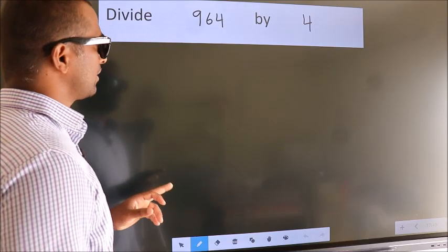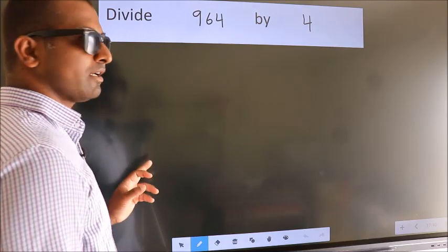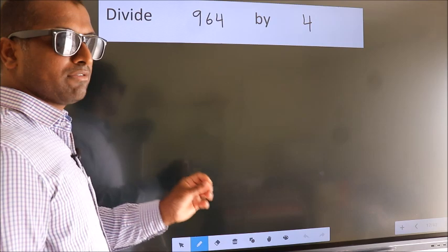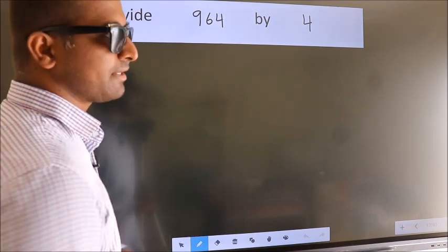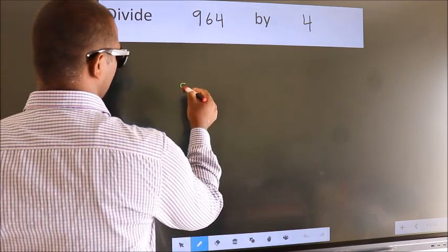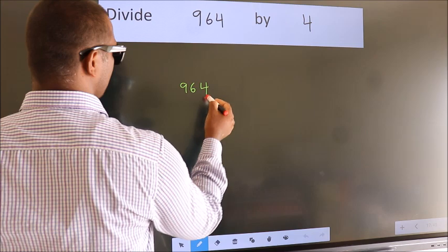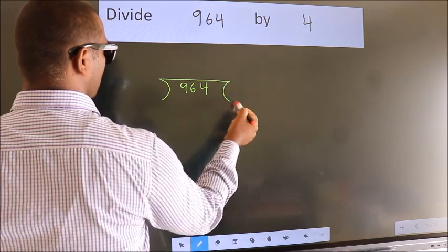Divide 964 by 4. To do this division, we should frame it in this way: 964 here, 4 here.